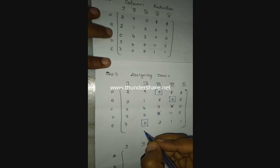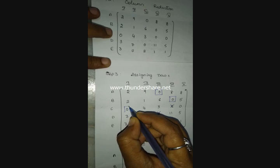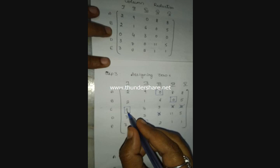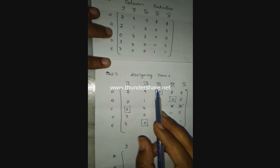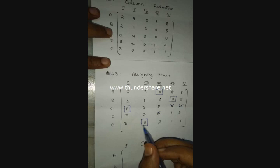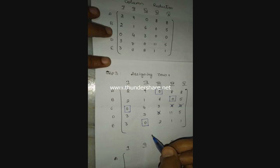Since no more single zeros remain row-wise, go column-wise. In the first column, there is a single zero — assign it and cancel the corresponding row. When assigning in a column, cancel the corresponding rows. At this point, we have only four assignments, but we need five for a 5×5 matrix.